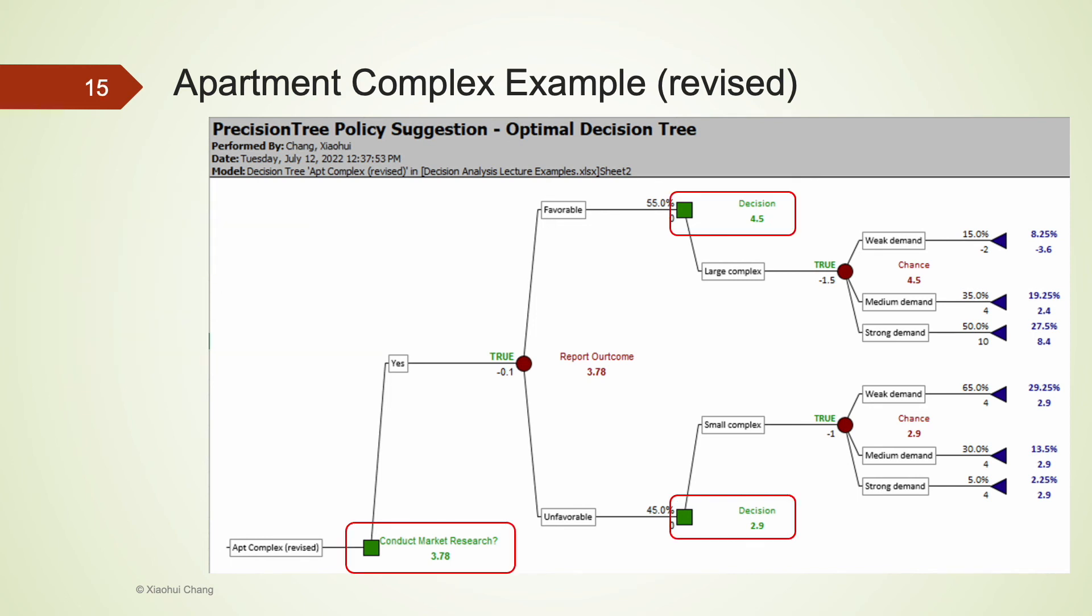The decision tree also shows the expected payoff—that is, EMV—at every stage of the decision problem. At the very first decision node, if the company follows the recommended strategy, the EMV is $3.78 million. But its expected payoff increases to $4.5 million after receiving a favorable report, and reduces to $2.9 million after receiving an unfavorable report.